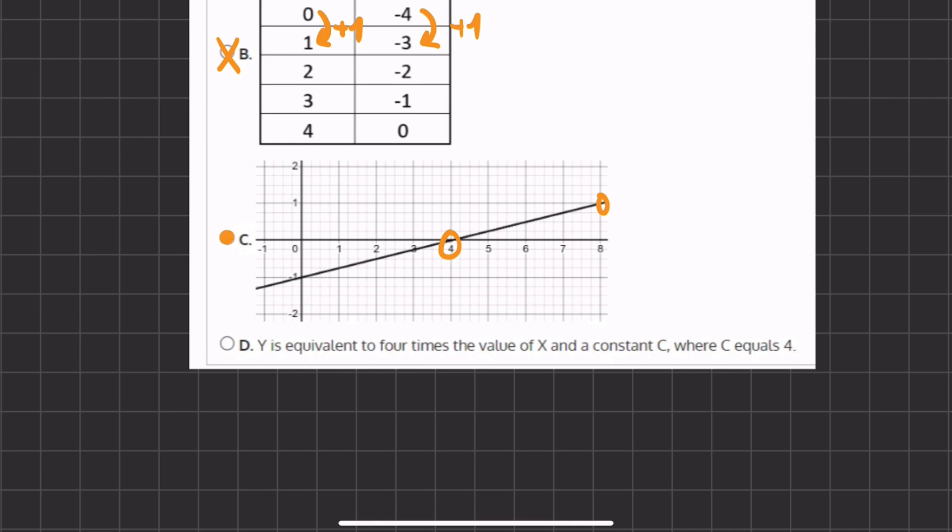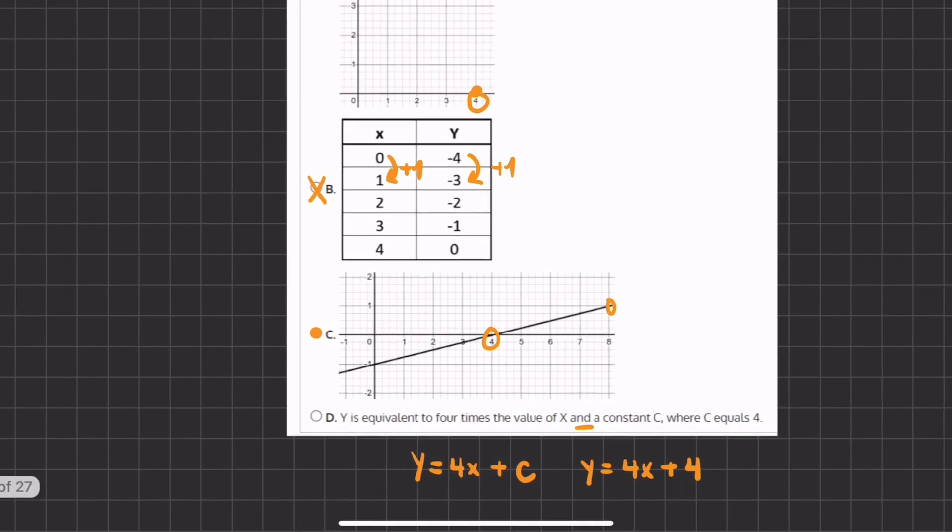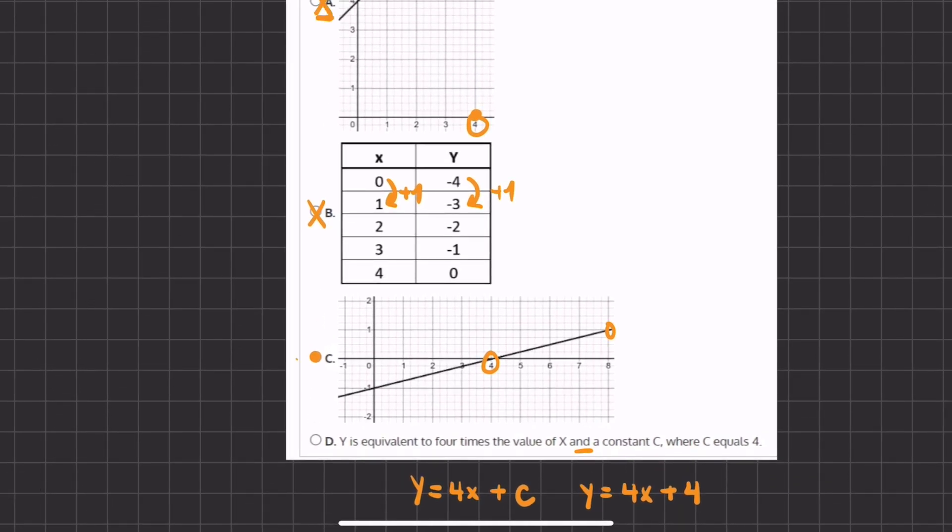And let's take a quick look at why D is not right. If we have y equals, let's write this out as we read, y is equivalent to 4 times the value of x and a constant C, where C equals 4. So instead of C, we can write 4. Let's rewrite it. y equals 4x plus 4. And this function is not equivalent to the function, the linear function that we are given in the beginning of the problem, and therefore is incorrect. And C will be our final answer.